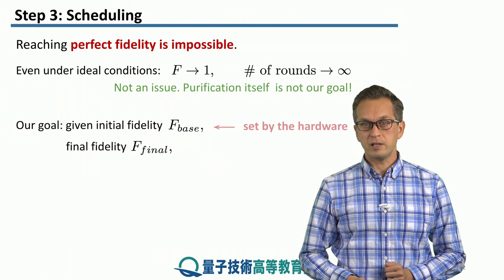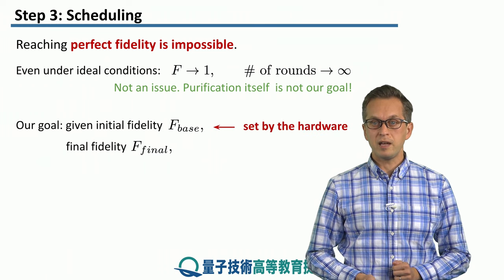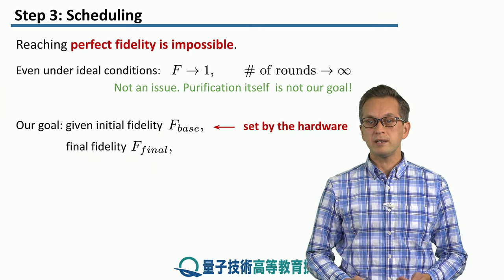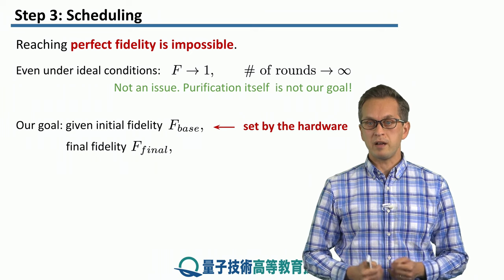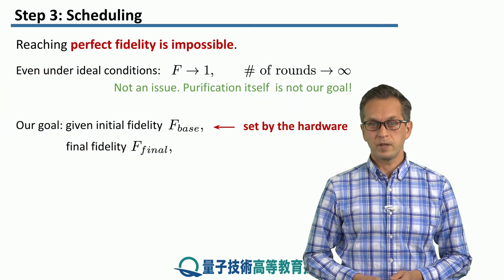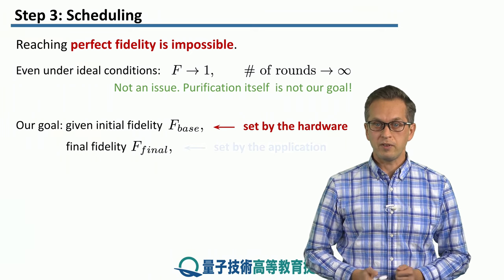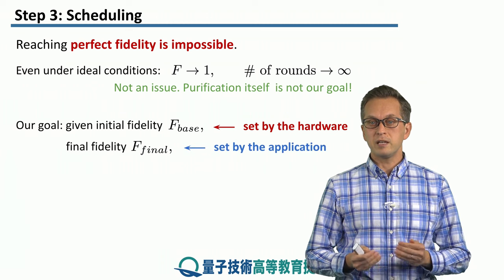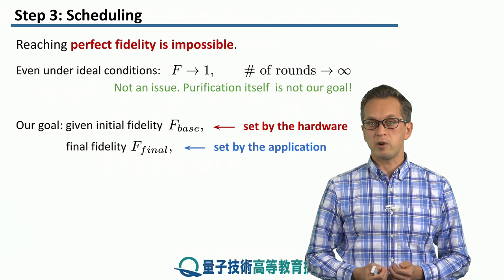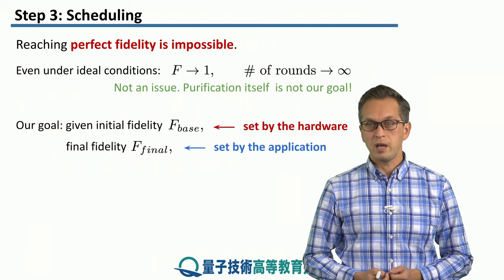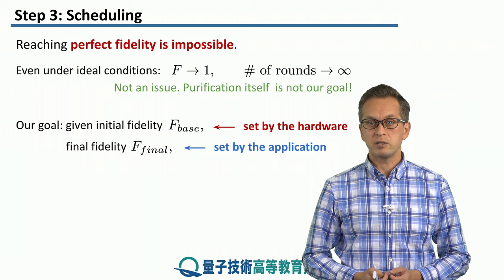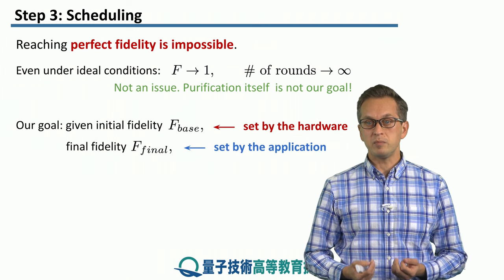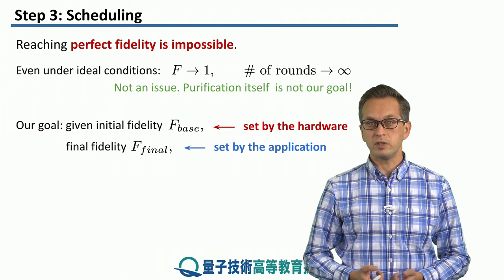The base fidelity is dictated by the hardware. The better our hardware is, the higher f_base we start with. And the final fidelity f_final is given by the application that we're trying to use. Every application has different fidelity demands, and these have to be met by the purification scheme.